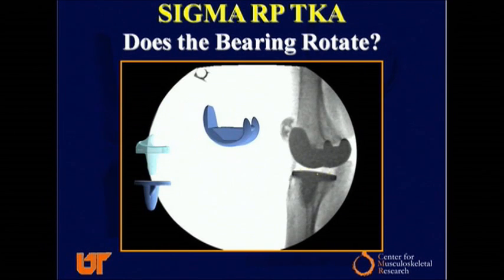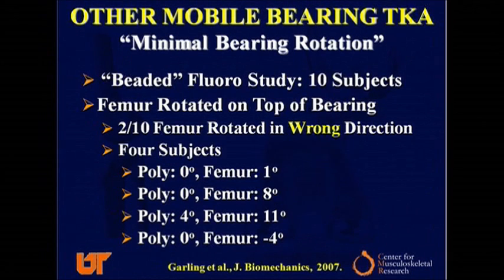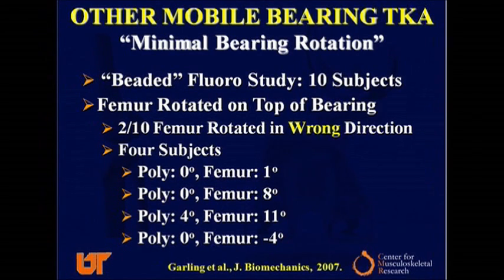We've been asked whether with the Sigma RP TKA the bearing rotates. Here's a beaded poly study where we put beads into the polyethylene and track it. Yes, we did see bearing rotation with the Sigma rotating platform TKA. But a study by Garleen et al. proves that not all mobile bearing knees get bearing rotation. In their study, most of the rotation was the femur on top of the poly; in two out of ten subjects the femur actually rotated in the wrong direction, and in many subjects the poly did not rotate at all.